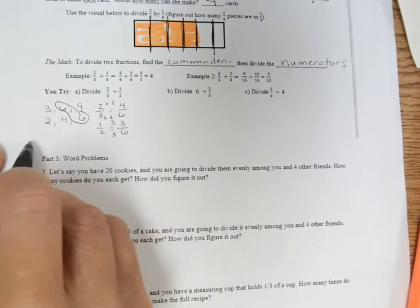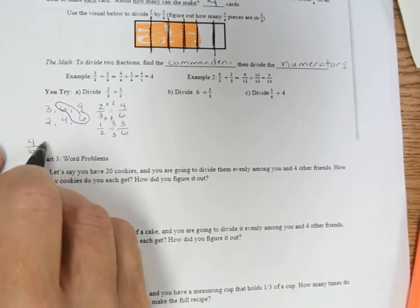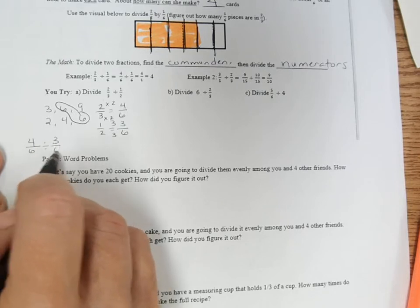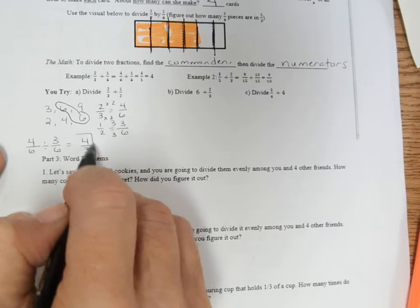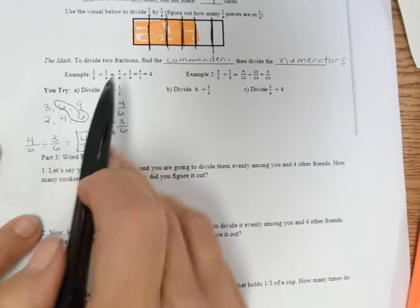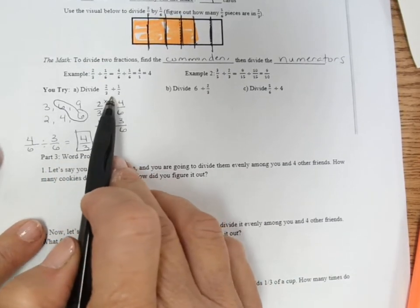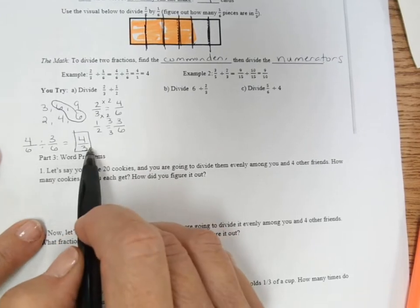So two-thirds is equivalent to four-sixths, and one-half is equivalent to three-sixths. So I set my problem up. Four-sixths divided by three-sixths equals four-thirds. That is my answer. Two-thirds divided by one-half is equal to four-thirds.